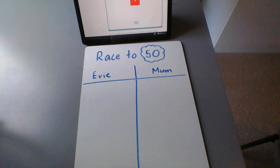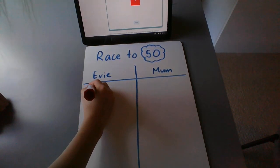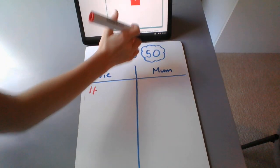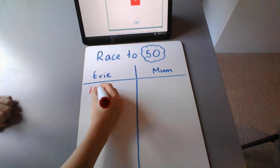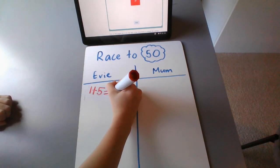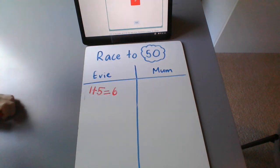So Evie's going to roll once. And she's got a one, so she's going to write a one in her column. And she's going to do one plus five because we're practicing our addition skills today. So she's going to do one plus five, and she knows that that equals six.